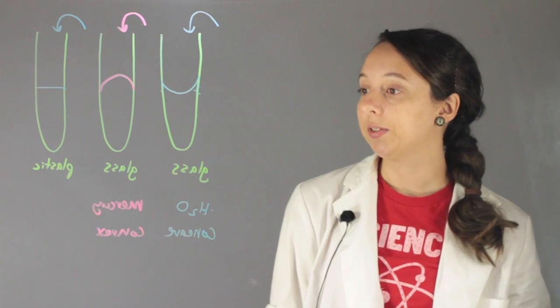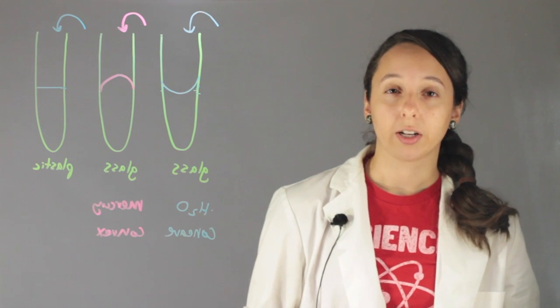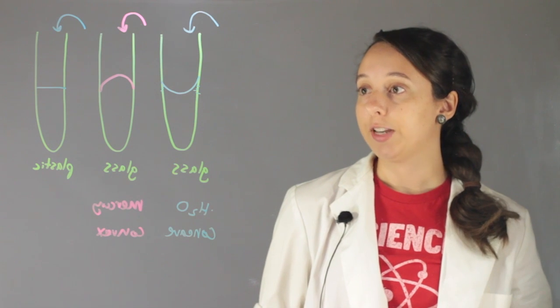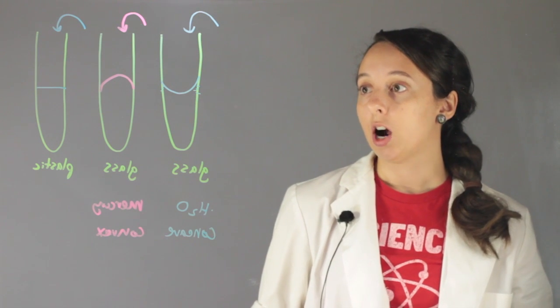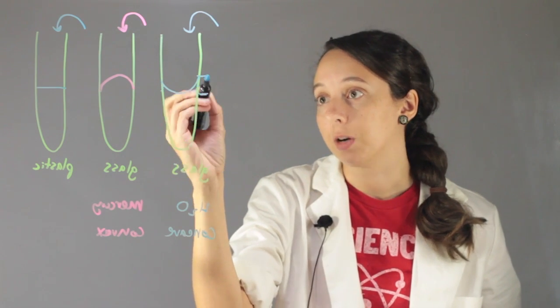One last thing about meniscuses is we have to know where we're going to measure our liquid level. Let's say we're going to measure out 10 milliliters of water. Are we going to take the 10 milliliters to be here at the top, or here at the bottom, or somewhere in between?